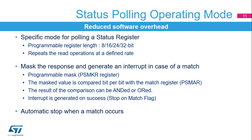A specific mode has been implemented in the Octo SPI interface to autonomously poll status registers in the external flash. The Octo SPI interface can be configured to periodically read a register in the external flash. The return data can be masked to select the bits to be evaluated. The selected bits are compared with their required values stored in the match register. The result of the comparison can be treated in two ways: in ANDED mode, if all the selected bits match, an interrupt is generated; in OR mode, if one of the selected bits matches, an interrupt is generated. When a match occurs, the Octo SPI interface can stop automatically.